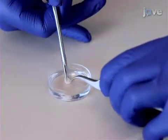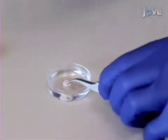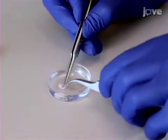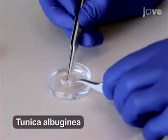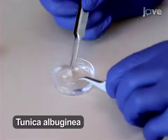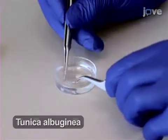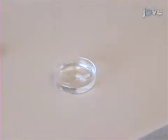Decapsulate the testes in a separate plate containing 8 milliliters of Krebs. Make an incision in the thin membrane that surrounds the seminiferous tubules. With one pair of forceps, hold the membrane. Now, with another pair of forceps, push the tubules out of and away from the membrane.